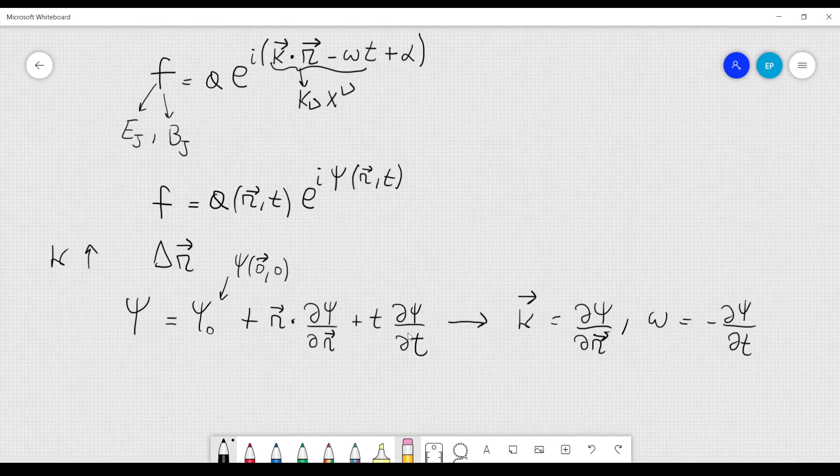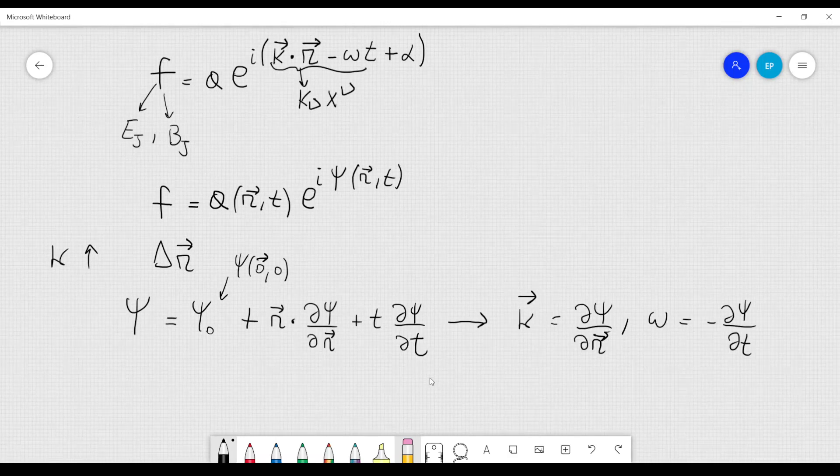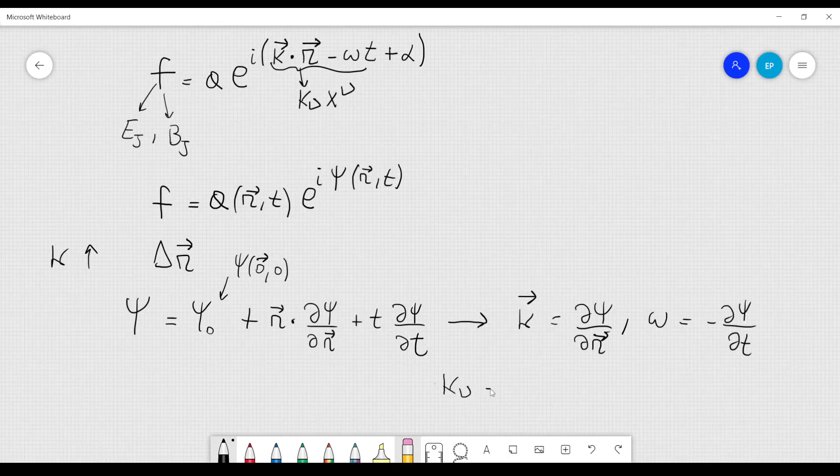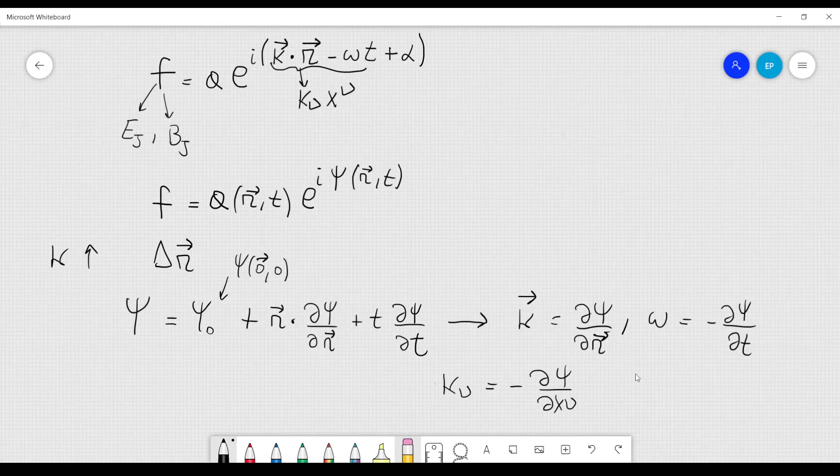Therefore we can define the four vector related to the wave number, this four vector is k nu, which is minus d psi over dx nu, where nu is an integer which goes from 0 to 3, so 0, 1, 2, and 3.